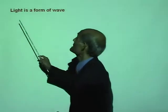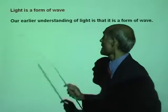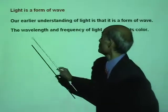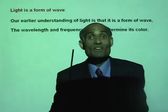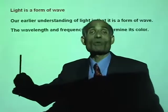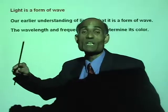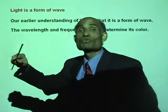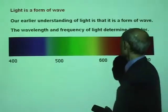Our understanding of light is that light is a form of wave. The wavelength and frequency of light determine its color. The long wavelengths are red, and as the wavelength becomes shorter and shorter, we see colors: orange, yellow, green, blue, violet, and so on.